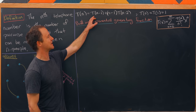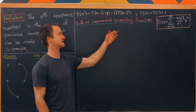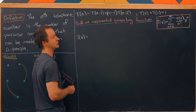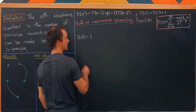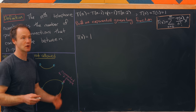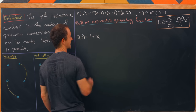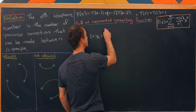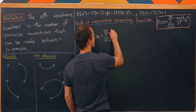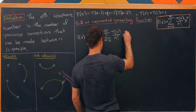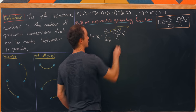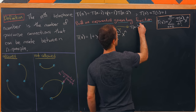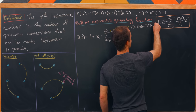We can only apply the recursion when n is at least two, since the seeds handle the first two cases. So we pull out the n=0 term — which is 1 — and the n=1 term — which is x — and then write the sum from n=2 to infinity of t(n) over n factorial times x to the n. We substitute t(n) = t(n−1) + (n−1)·t(n−2) from the recursion.